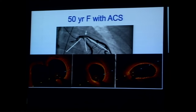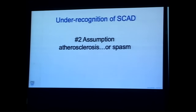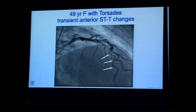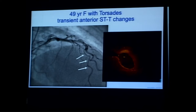A second reason for misrecognition of SCAD is we call things spasm. Here's a patient with transient ST changes and torsades de pointes, with a diffusely narrowed LAD that we might have called normal or spasm. But evaluating with OCT, we see again a huge collection of intramural hematoma causing a compressive, diffuse narrowing of the LAD.